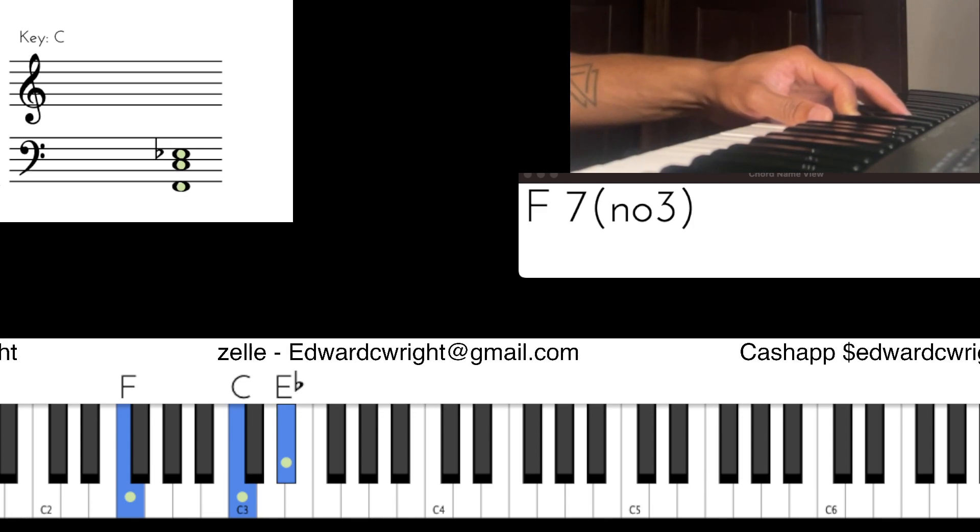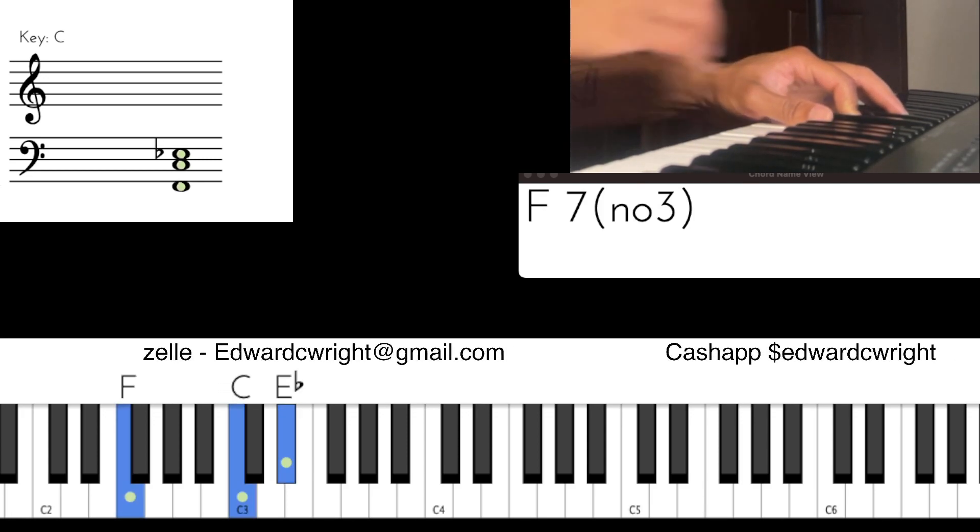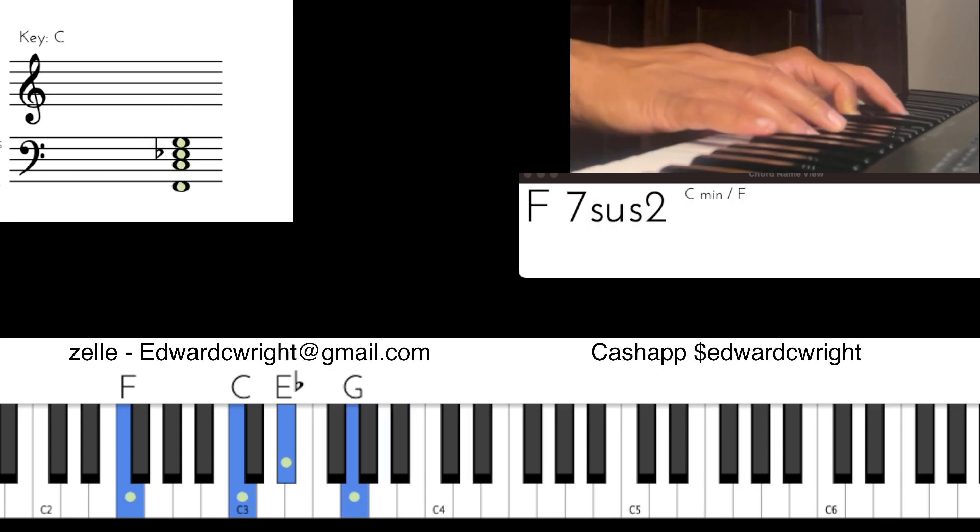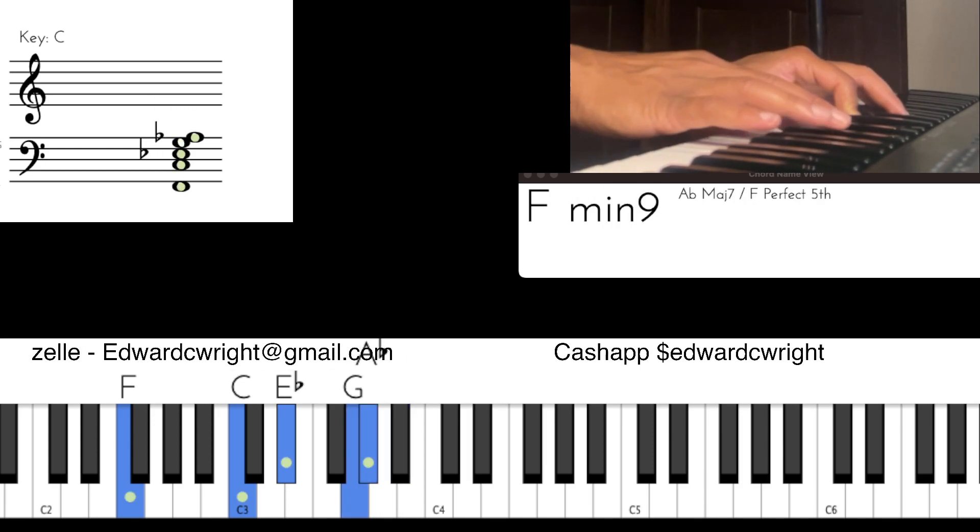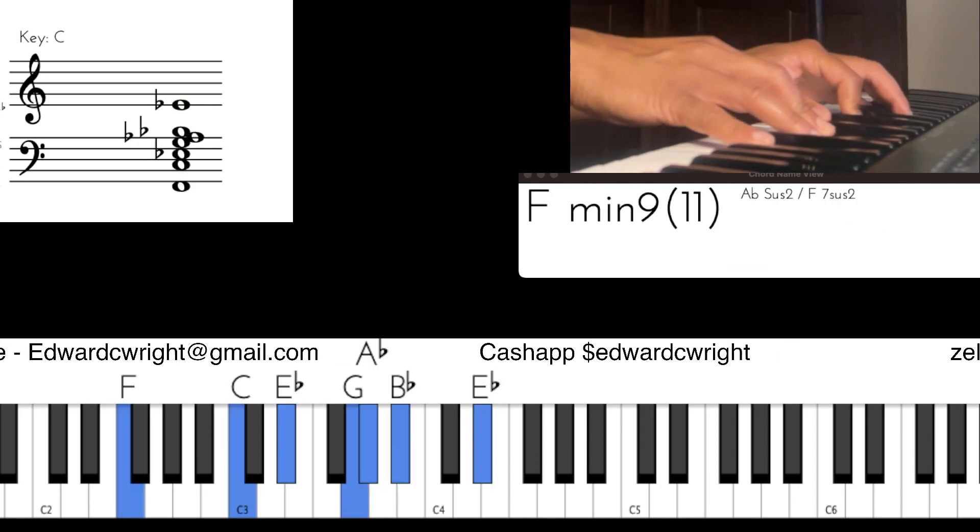That's F, C, and E flat. That's F, C, and E flat. In our right hand, we have the nine, flat three, four, and flat seven. That's the nine, G, the flat three, A flat, the four, B flat, and the flat seven, E flat. All right?